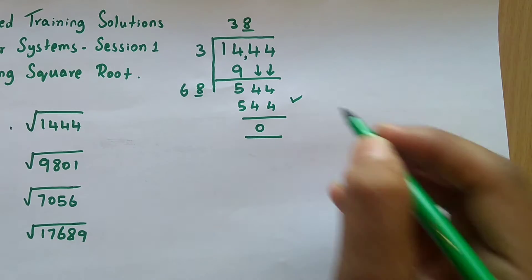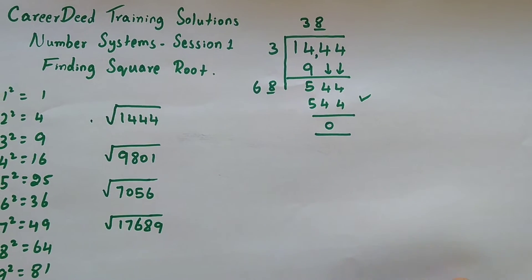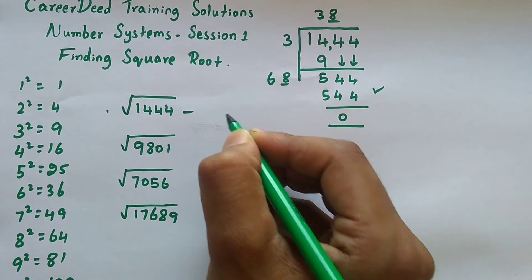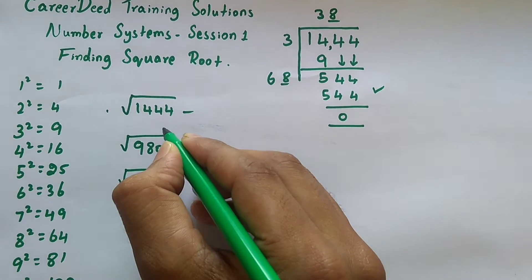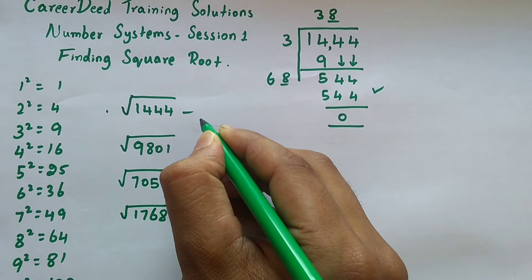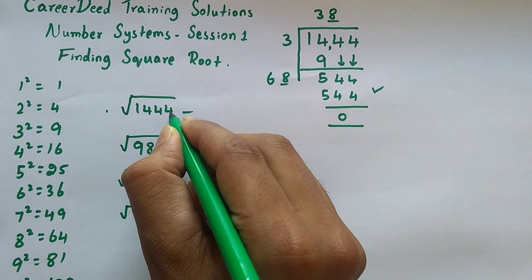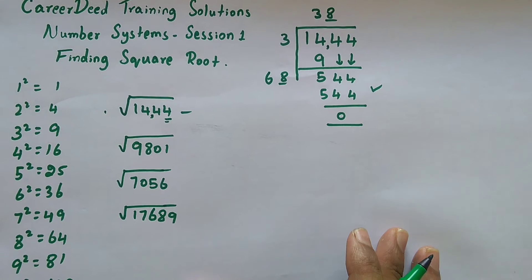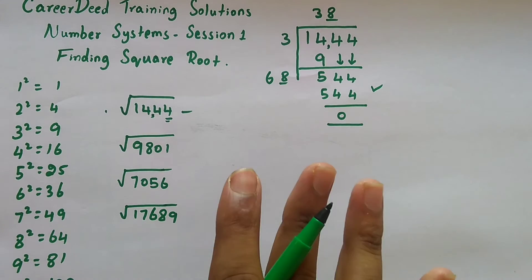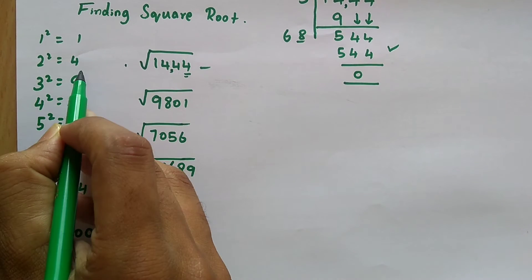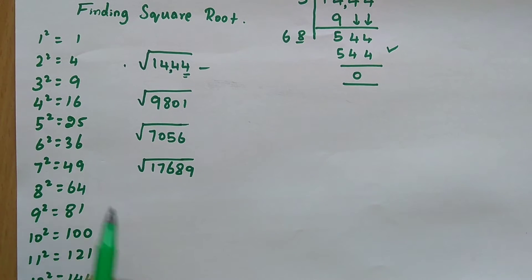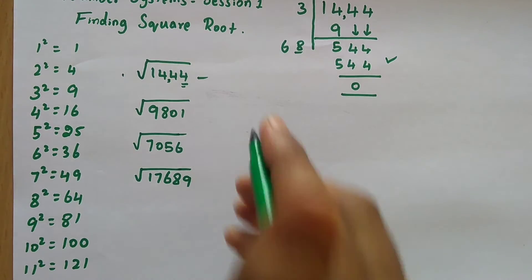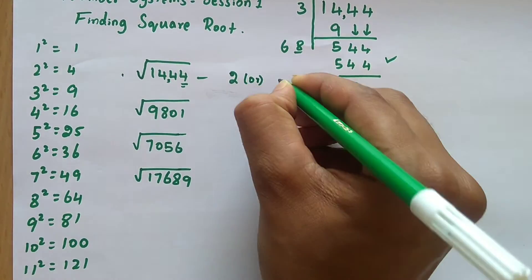Now let me show you how to solve square roots in less than 20 seconds using a short trick. In the traditional method you divide digits from the left into groups of two, but in the short trick you divide from the right. Here the last digit of 1444 is 4. If the last digit is 4, which numbers when multiplied by themselves give 4 at the end? Either 2 x 2 = 4, or 8 x 8 = 64. So the last digit of the answer is going to be 2 or 8.